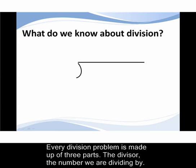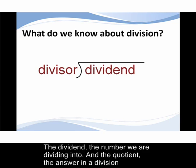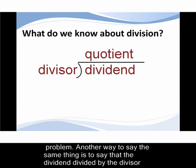Every division problem is made up of three parts. The divisor, the number we are dividing by. The dividend, the number we are dividing into. And the quotient, the answer in a division problem.